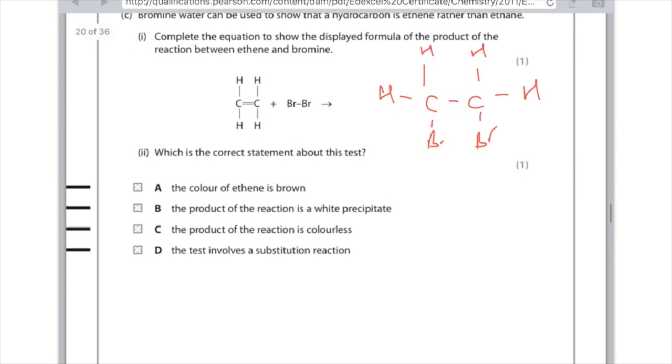Which is the correct statement about this test? The colour of ethene is brown. Nope. The product of the reaction is a white precipitate. No, we're not talking about salts. The product of the reaction is colourless. Yes, because it goes from orange to colourless. The test involves a substitution reaction. No, I just told you it was an addition reaction.